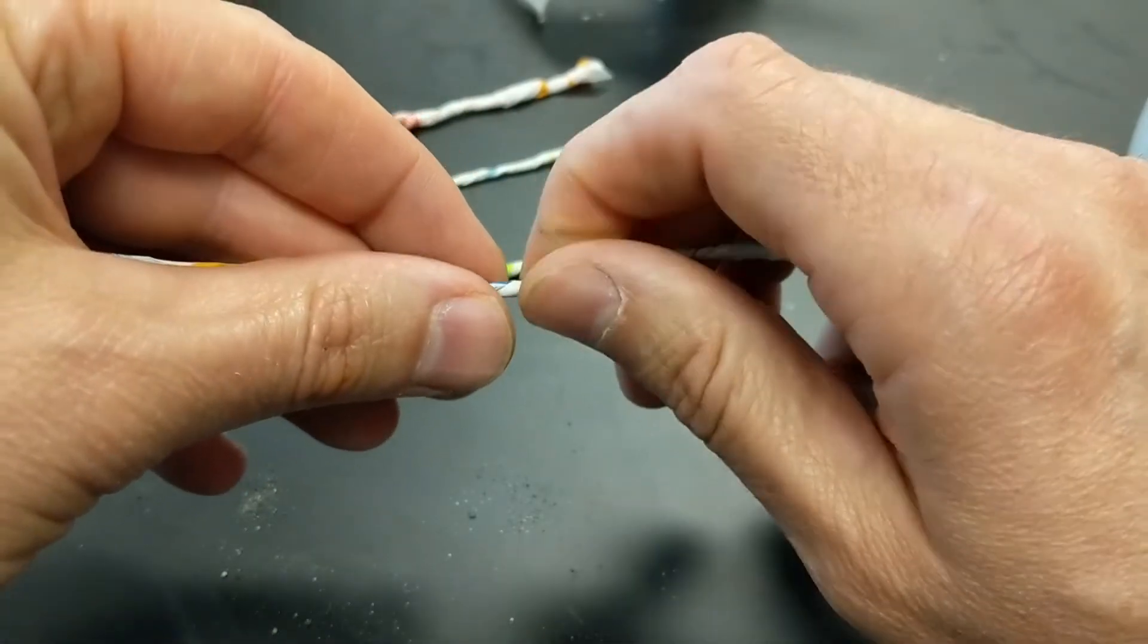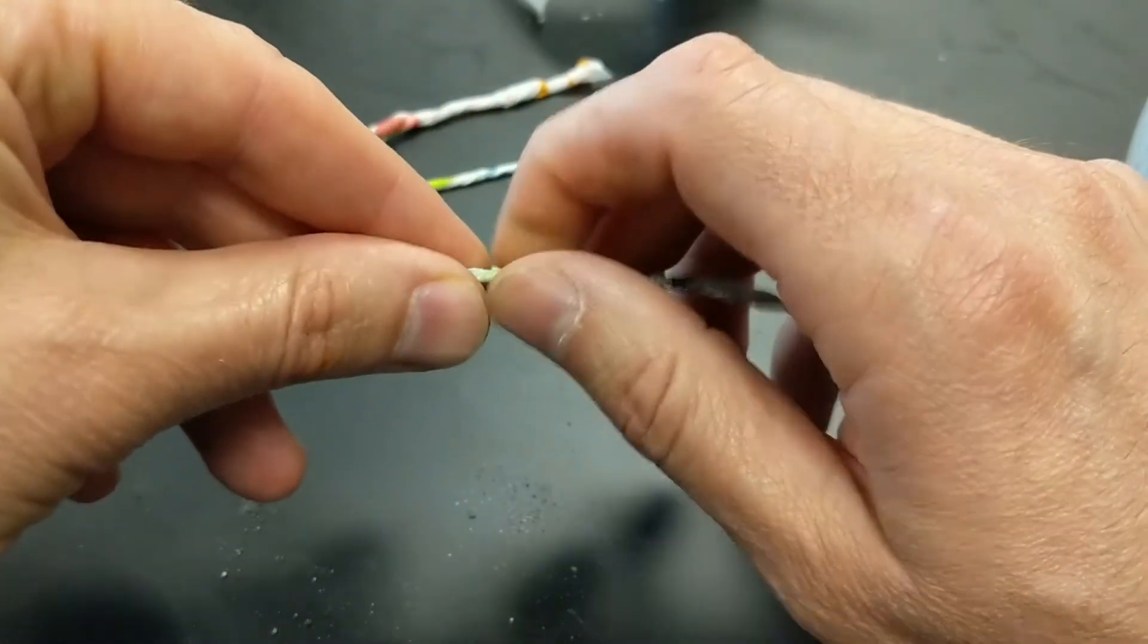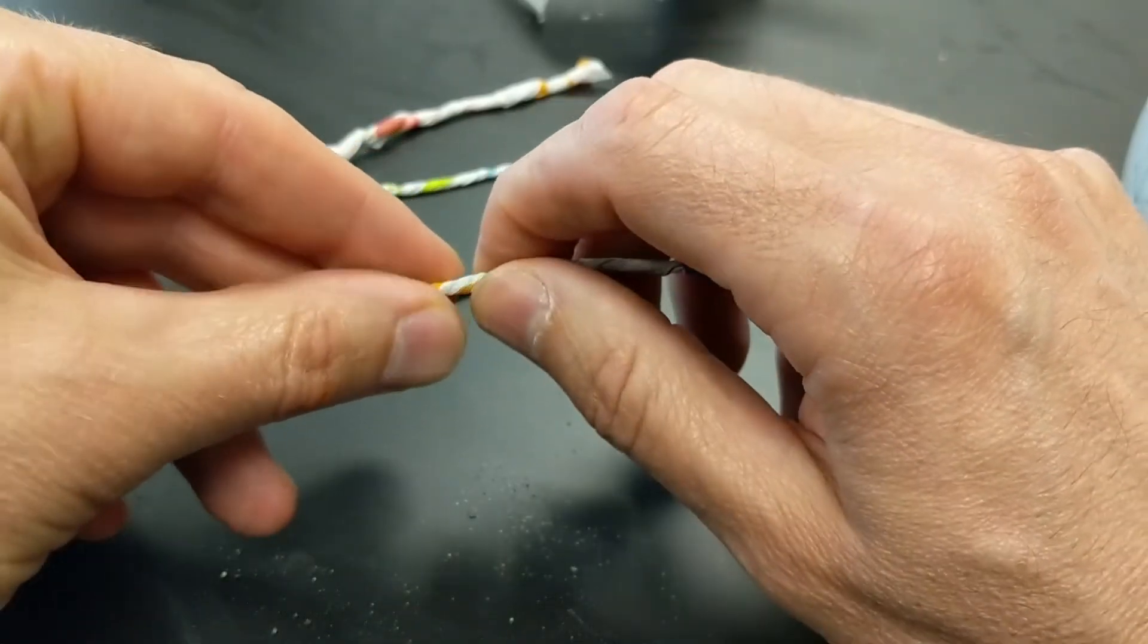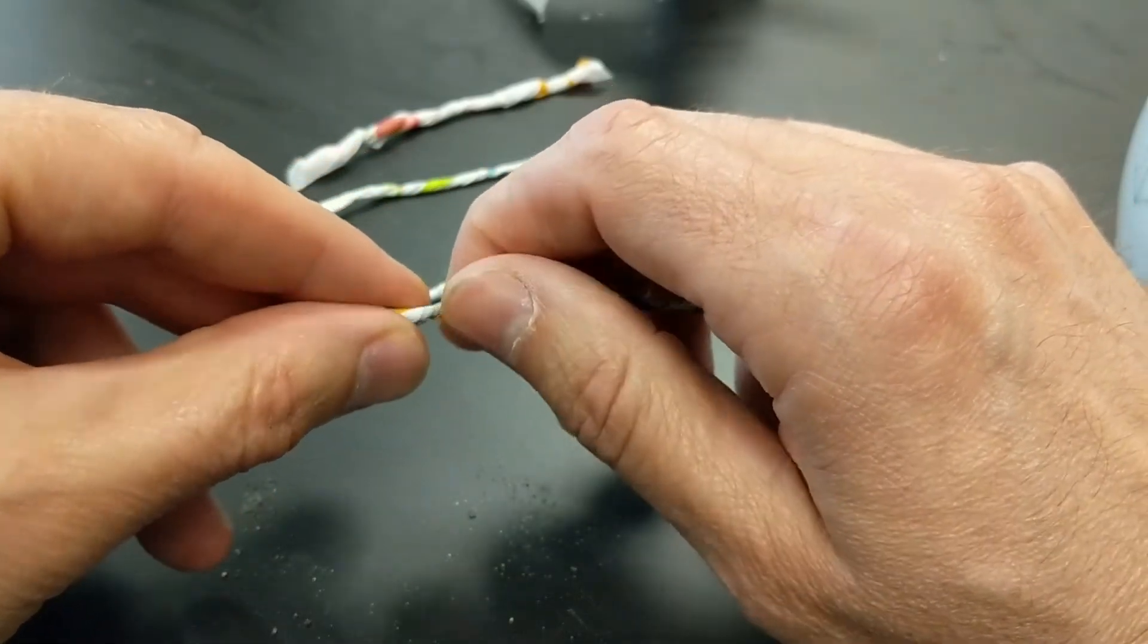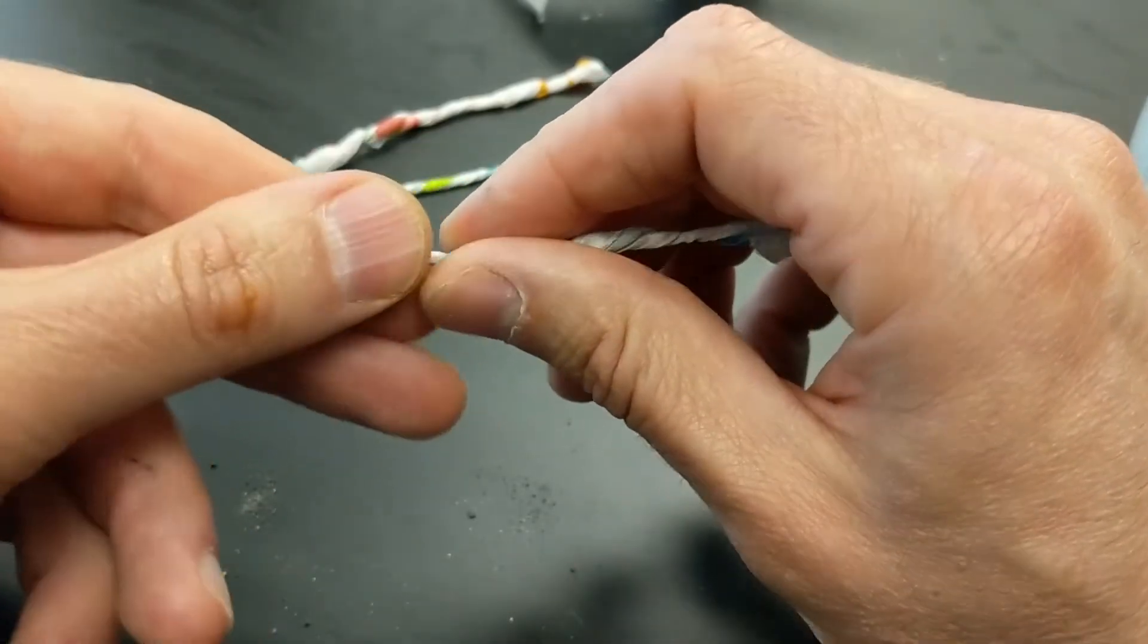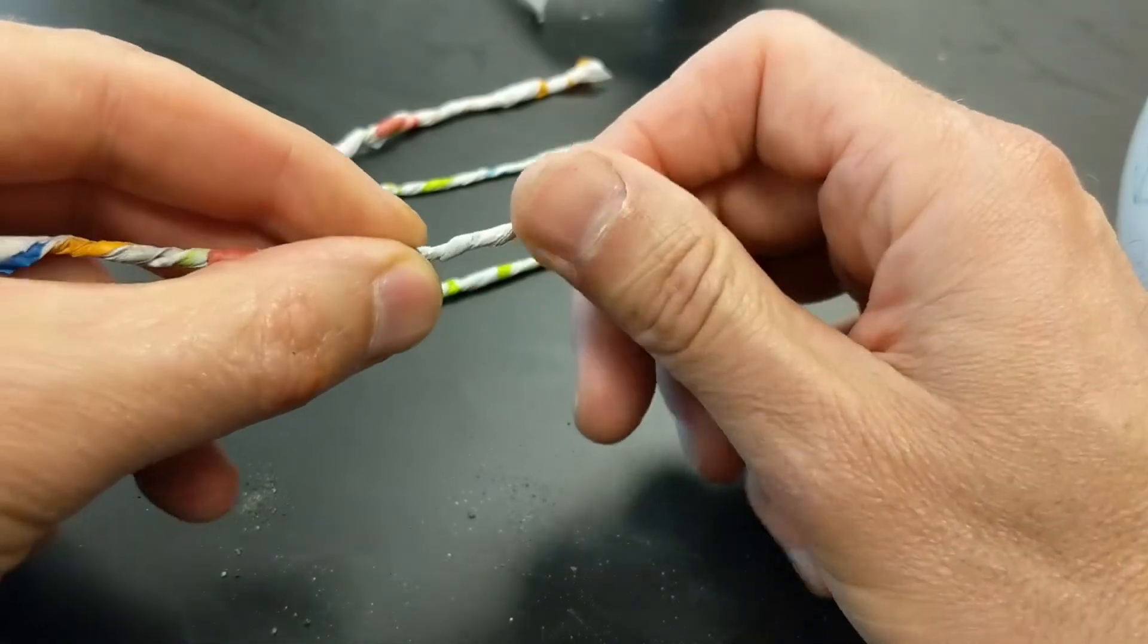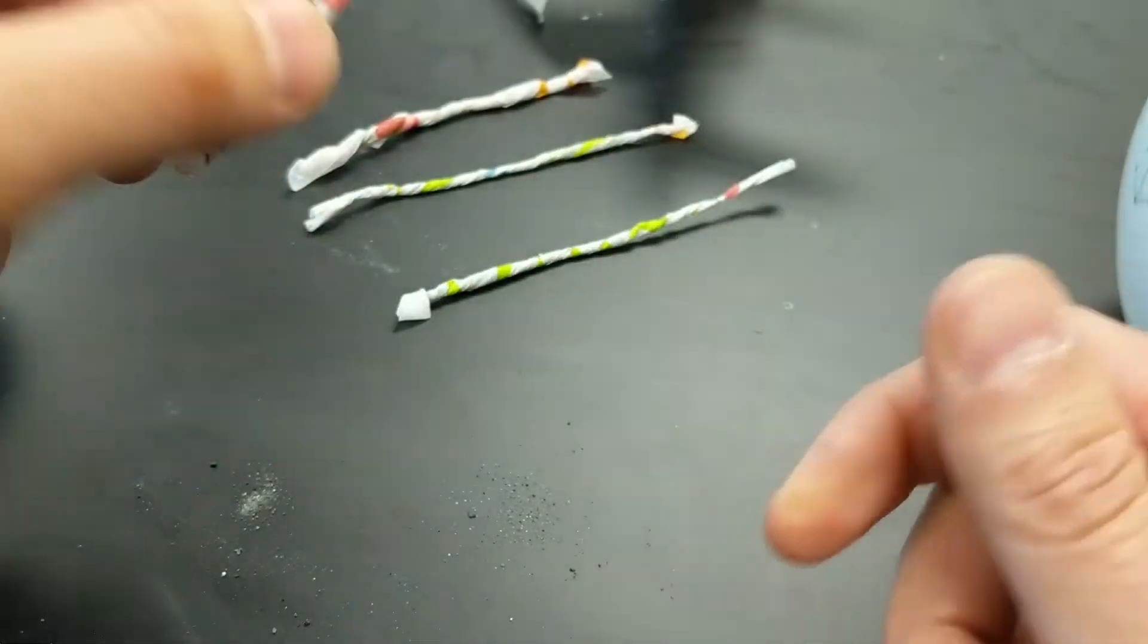Again, you don't want to tighten it so much that you rip the tissue paper. Now I've often thought about wetting these and letting them dry and maybe you get a tighter wrap that way. But I haven't tried that yet. I have a drying oven but it just hasn't happened yet. So here we go. So that's not bad.